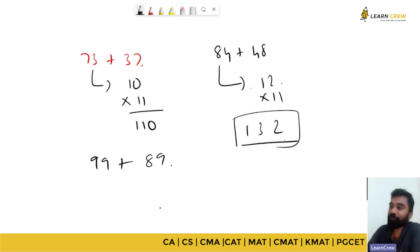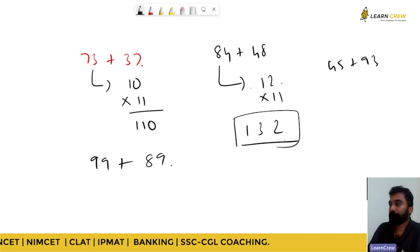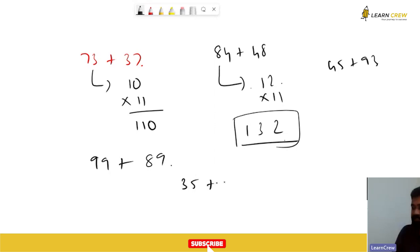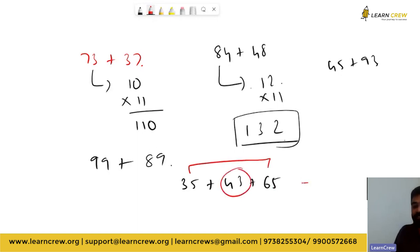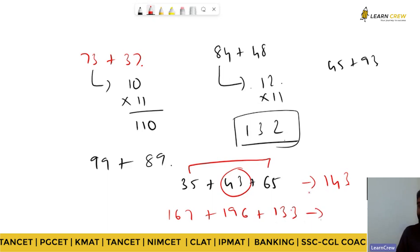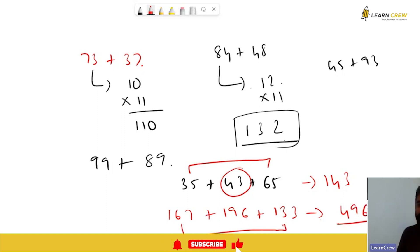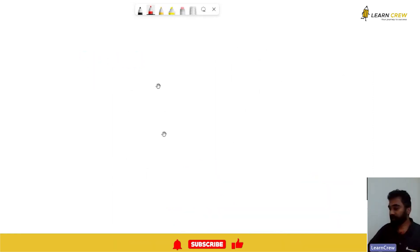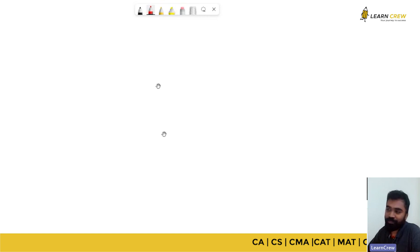45 plus 93? 35 plus 43 plus 65? 143. These two numbers make 100, and this added together becomes 143. 167 plus 196 plus 133? 496. These two together come up to 300—167 plus 133 comes up to 300—add 196 to it. Fine, most of you are okay with addition. Not quick enough, but okay.